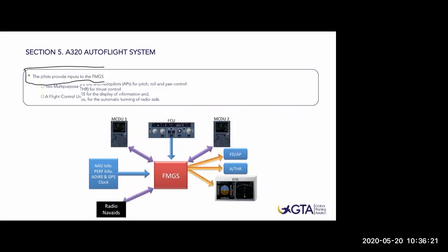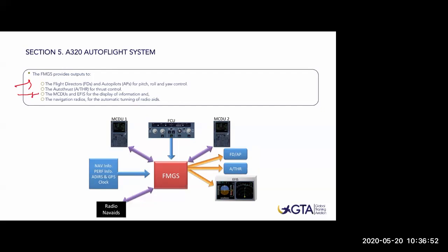Now, what about the outputs of the FMGS? We've seen it receives air data, route, performance, clock, and radio navigation. The outputs include: the flight directors and autopilots for pitch, roll, and yaw control; autothrust; and the MCDUs and EFIS for the display of information. Once the FMGS has my information, it shows me my selected route on the EFIS screens. The autopilot is also an output - if I told the aircraft I want to cruise at 35,000 feet, the output is that it will automatically cruise at that level.